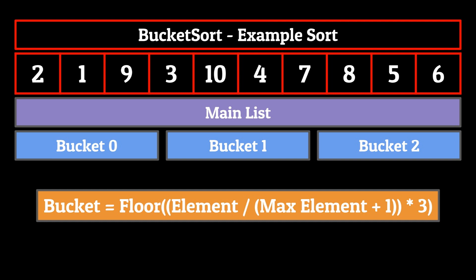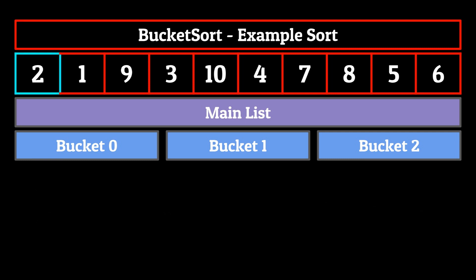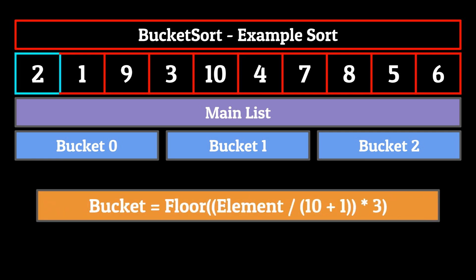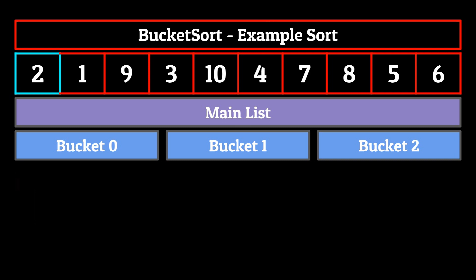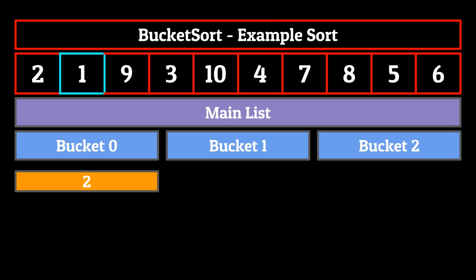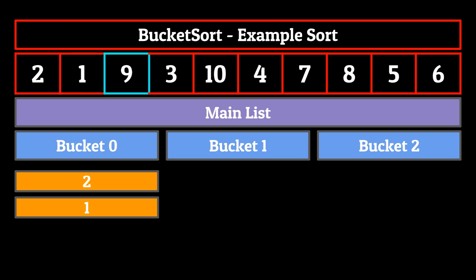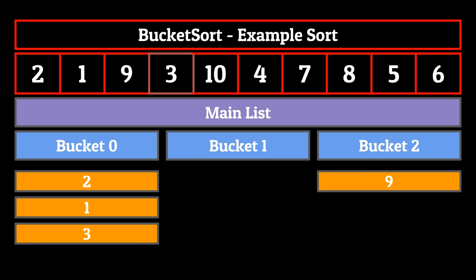So now that we have our hash function, let's finally go through the list and place each element in its corresponding bucket. Let's take a look at the first element. The maximum element of our list is 10. So let's plug in one plus that, or 11, into our equation. Two divided by 11 times three is 0.546. And so our floor function outputs zero.